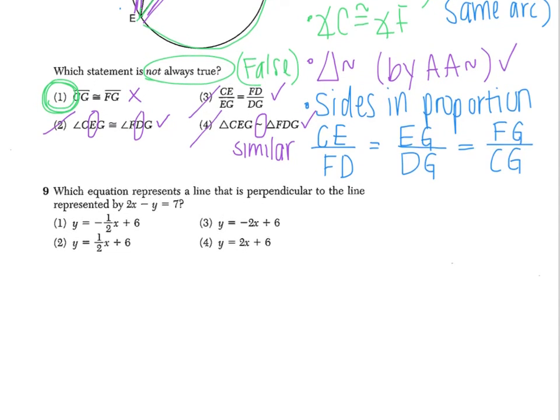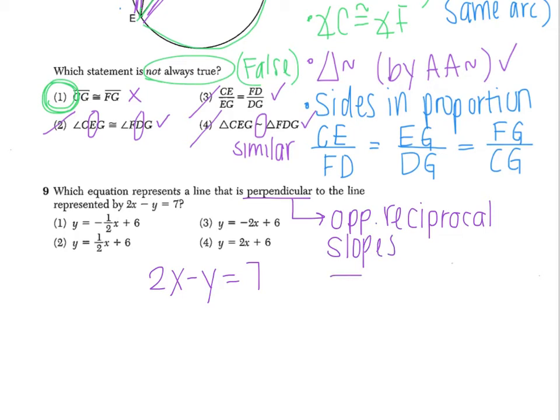Number nine says, which equation represents a line that is perpendicular to the line represented by 2X minus Y equals seven? So first I know that perpendicular lines have opposite reciprocal slopes, which just tells us to flip and negate the slope.